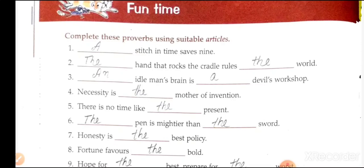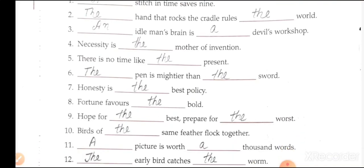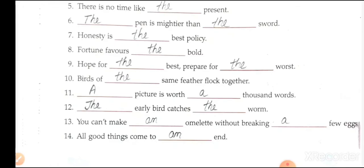Fun time! Complete these proverbs using suitable articles: A stitch in time saves nine. The hand that rocks the cradle rules the world. An idle man's brain is the devil's workshop. Necessity is the mother of invention. There is no time like the present. The pen is mightier than the sword. Honesty is the best policy. Fortune favours the bold. Hope for the best, prepare for the worst. Birds of the same feather flock together. A picture is worth a thousand words. The early bird catches the worm. You can't make an omelette without breaking a few eggs. All good things come to an end.